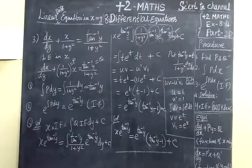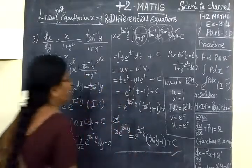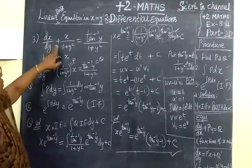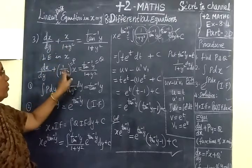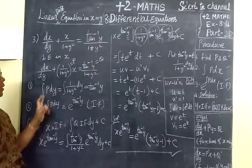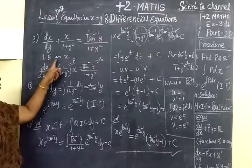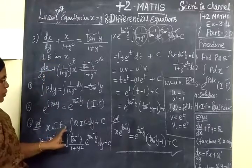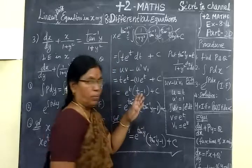Now we verify the answer for the third question. The answer is x times e to the power of tan⁻¹y equal to e to the power of tan⁻¹y times (tan⁻¹y minus 1) plus c. This is a simple question. We found the linear differential equation in x, identified P and Q, found the integrating factor e to the power of tan⁻¹y, then applied Bernoulli's method. Thank you.